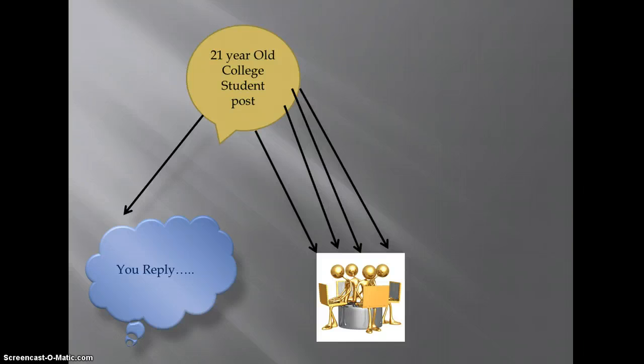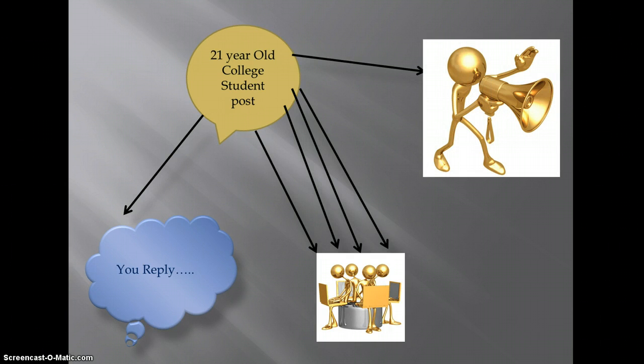But that 21-year-old college student is also friends with the high school students. And so he has a couple friends that are high school students and they also see your post. And so in their minds, right, wrong, or indifference, potentially in their parents' minds, it suddenly looks like approval of certain things or approval of a statement or approval of a comment.